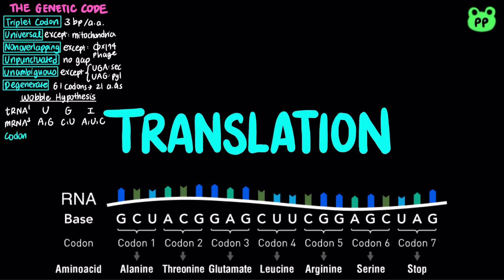Codon bias refers to the phenomenon that not all codons are used equally frequently. Some codons for a particular amino acid are used more frequently than others.